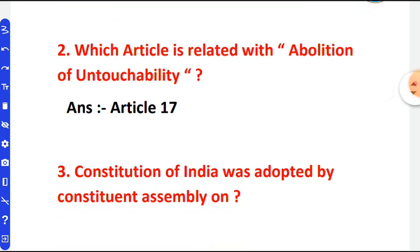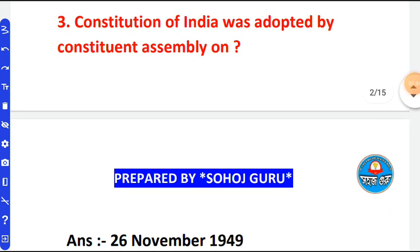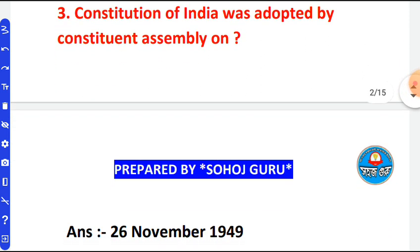Which article is related to the abolition of untouchability? The next important question is about Dr. B.R. Ambedkar. The Constitution of India was adopted by the Constituent Assembly on a specific date.